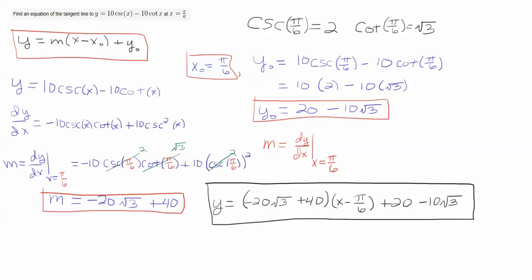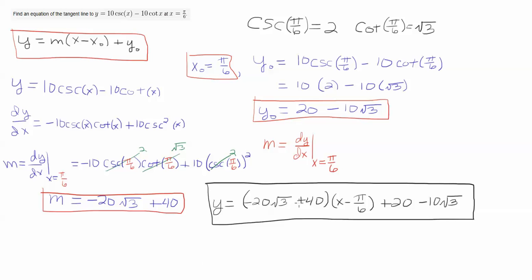And then we can finish off the problem by just substituting m into the tangent line formula there, the x naught, which is the pi over 6 there, and the y naught term, which is over there. And that is how we find the tangent line to this curve at pi over 6.